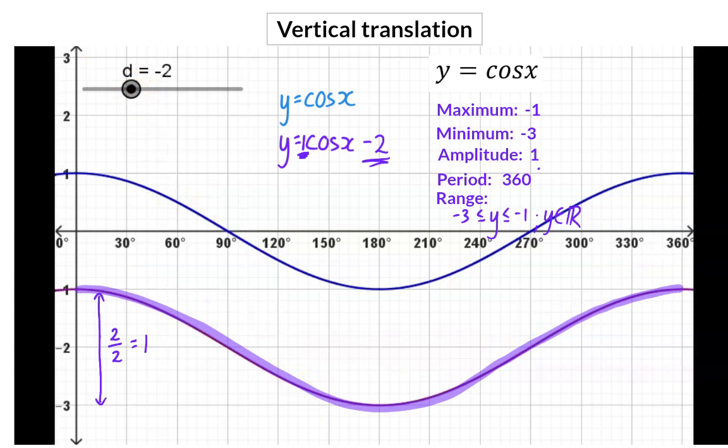This is now all the values from minus three to minus one. So we can conclude that any constant value added or subtracted to the end of a trig equation will move the graph vertically upwards or downwards.